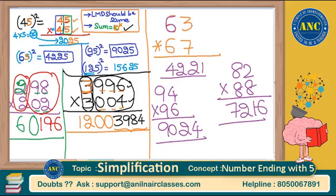To summarize: leftmost digit should be same, and the sum of the remaining digits should be of the form 10 power k. We are discussing all that is required so that our simplification problems become very easy. Believe me, you will enjoy simplification problems after learning all these shortcuts in today's class.